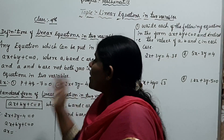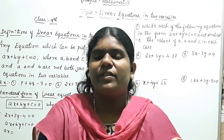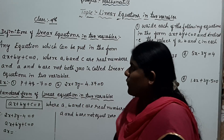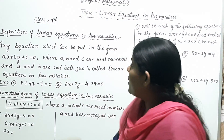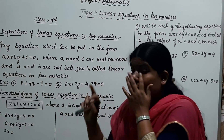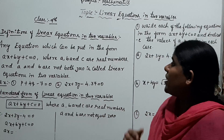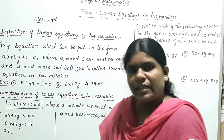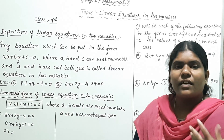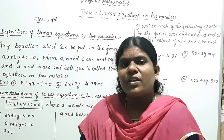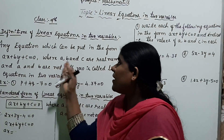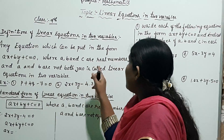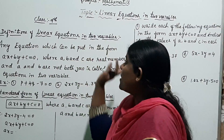First, definitions of linear equations in two variables. Any equation which can be put in the form AX plus BY plus C is equal to zero, where A, B, C are real numbers — both rational and irrational numbers. Here, A and B are not equal to zero. This is called a linear equation in two variables.